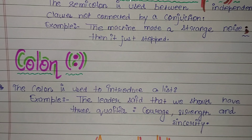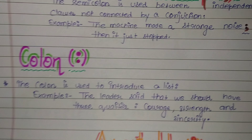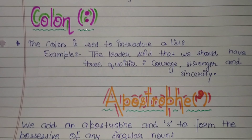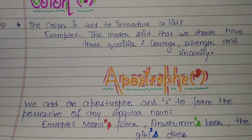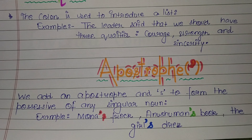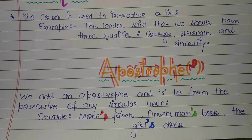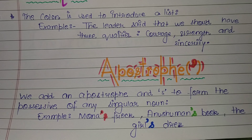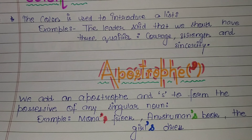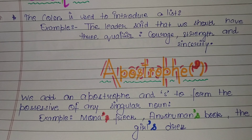...courage, strength, and sincerity. The next one is the apostrophe. We add an apostrophe and 's' to form the possessive of any singular noun. Examples: Mona's frock, Shuman's book, and the girl's dress.